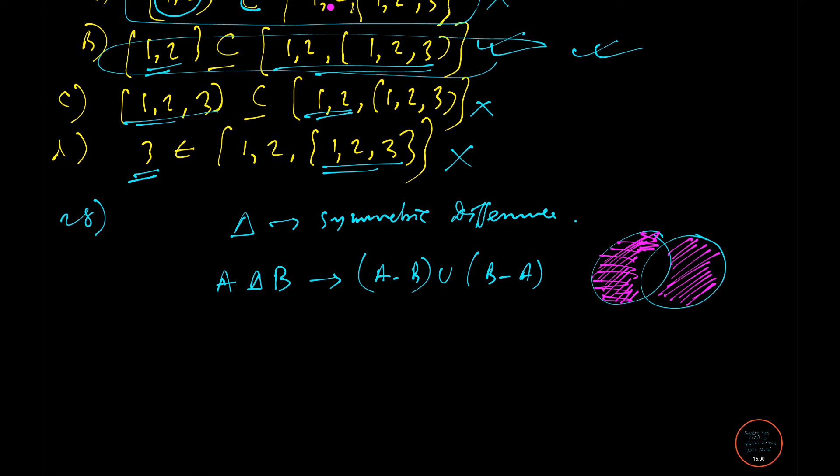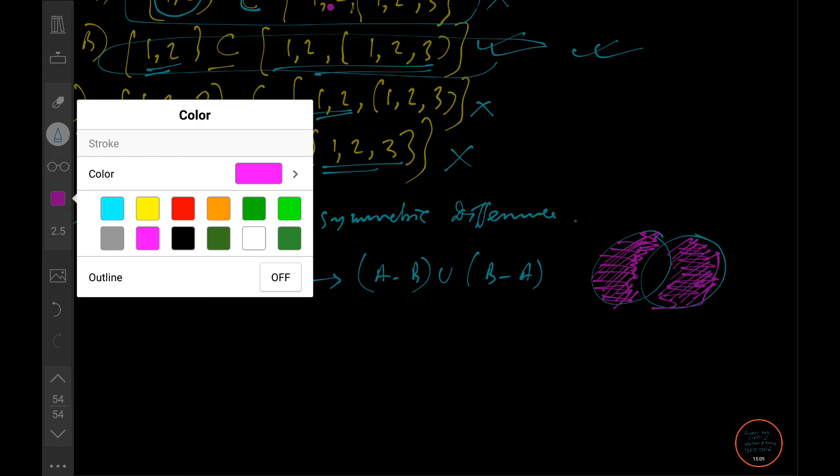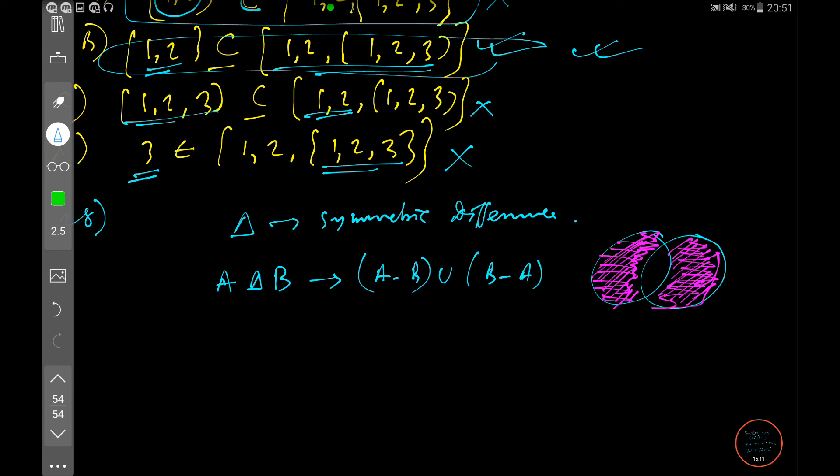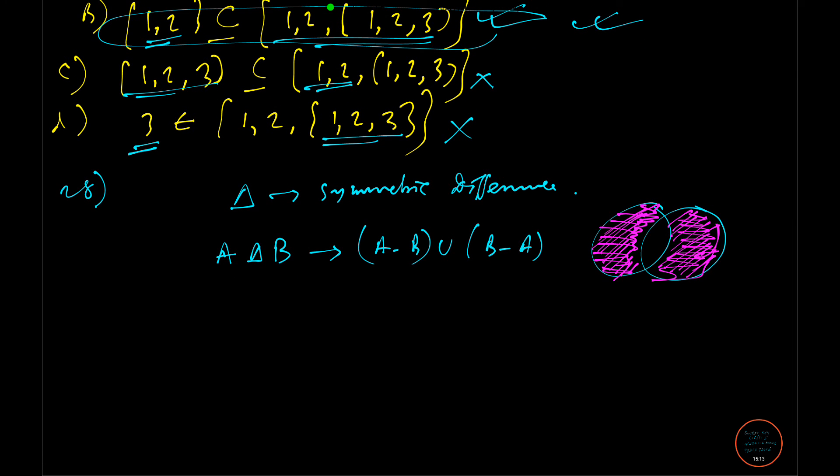This is A minus B and this is B minus A. Now how to solve this question. Now if you know this part, all is left is a little bit of basic calculation of set theory.